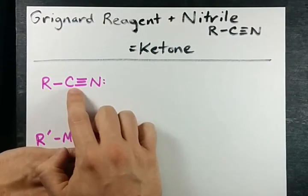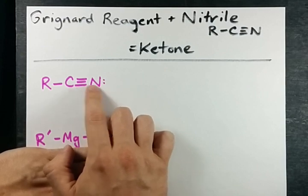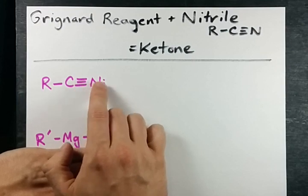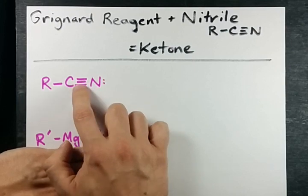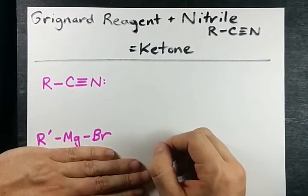A nitrile is a carbon chain that has a triple bonded N on the end of it. This has to be at the end because carbon can only make four bonds and three of them are to this N. You have a sigma bond and two pi bonds, the pi bonds being weaker because pi bonds are weaker than sigma bonds.